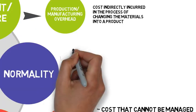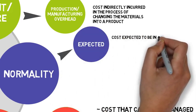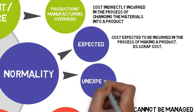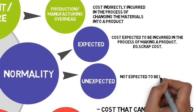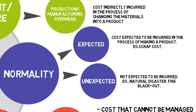Lastly is normality. Normal or expected is cost expected to be incurred in the process of making a product. For example, scrap cost. Opposite to normal is abnormal or unexpected, which is not expected to be incurred. For example, natural disaster, fire, blackout.